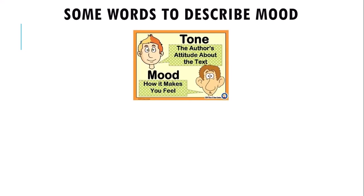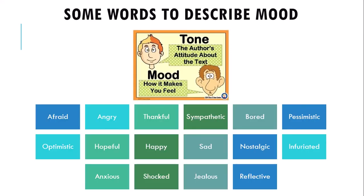How would we describe mood? That's the audience's reaction. The author's attitude about the text is the tone, and the mood is how it makes you feel as a reader. It's very similar in terms of the words we use. Do you feel afraid? Do you feel angry? Do you feel sad? Nostalgic? Does it make you reflect on something? Are you inspired, or are you infuriated? We use those emotion words to describe both tone and mood — it just has to do with how the audience feels versus how the author feels.